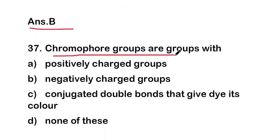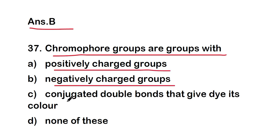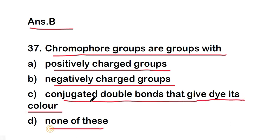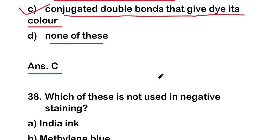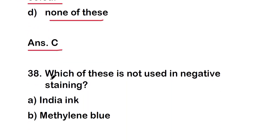Next question: chromophore groups are groups with positively charged group, negatively charged group, conjugated double bonds that give the dye its color, or none of these? The right answer is option C — conjugated double bonds that give the dye its color. These are chromophore groups.